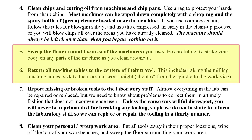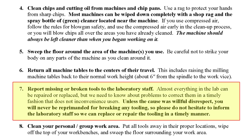Step six asks that you return all machine tables to the centers of their travel. We will show you what this means when we train you on how to use the lathe and the mills, but essentially this simply means to leave each machine as you found it so it is ready for the next operator to use. Cleanup procedure number seven is very important, so please place an asterisk next to it. It asks that each facility user please report missing or broken tools to the lab staff. Almost everything in the lab can be repaired or replaced as long as we know about it in time. Tools will be broken as a normal part of learning to use the equipment. Unless the cause was willful disrespect, you will never be reprimanded for breaking any tooling, so please do not hesitate to inform our staff so we can replace or repair the tooling in a timely manner.